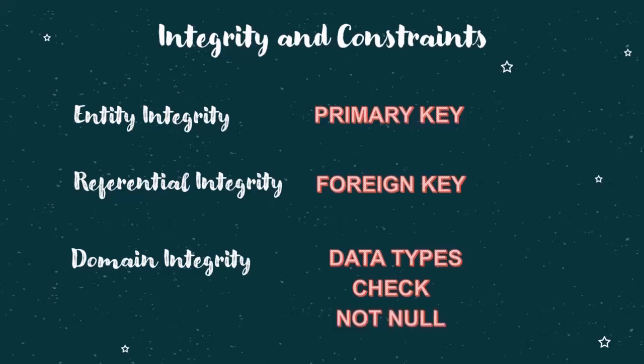Next within Domain Integrity is the Not Null constraint. If we know that a particular column cannot accept null values — for example, if every student must have an email ID — we can declare that column as Not Null. Similarly, we can declare the email ID column as Unique so that no two students can share the same email ID.